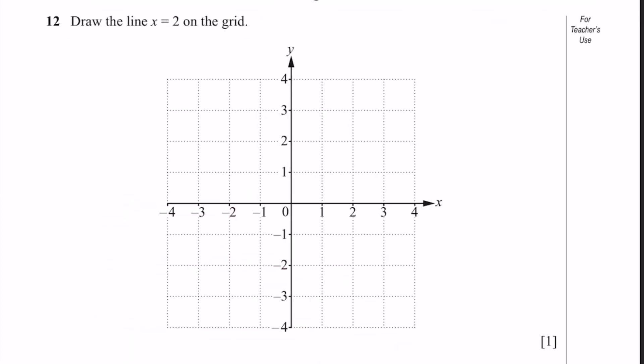Question 12. Draw the line x equals 2 on the grid. We need to draw a line where all the points have the x value of 2. That line is always a vertical line, and that line which is x equals 2 passes through the point 2 comma 0. That's the answer.